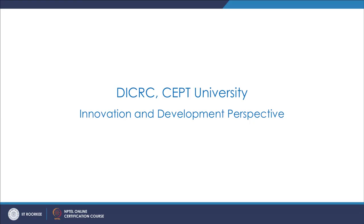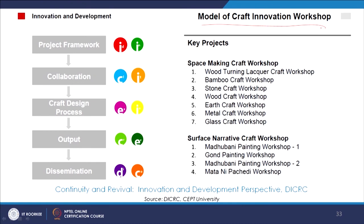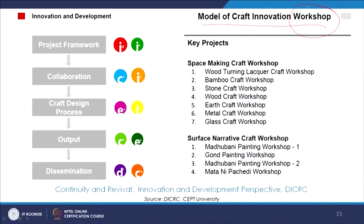We will see some of the works of the DICRC SEPT University very briefly and visually — how they have done some projects with a focus on innovation and development. They have a model of craft innovation and usually conduct workshops at the end of which innovative prototypes are documented and disseminated. They have a project framework, a collaboration aspect, a craft design process, an output, and then dissemination.